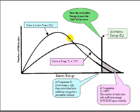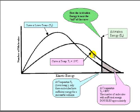Here's a graph with the lower temperature and higher temperature curve on the same graph. At the lower temperature, the molecules under this small triangle are the ones with sufficient energy for a successful collision. At the higher temperature, the curve shifts to the right, and we can see about double the number of molecules now have sufficient kinetic energy, making the reaction about twice as fast.